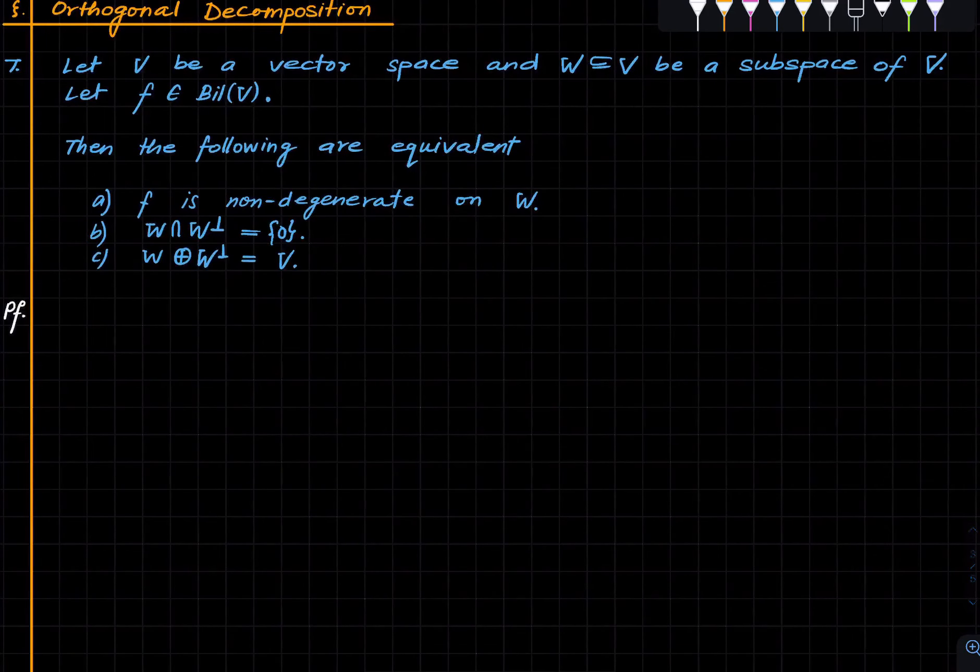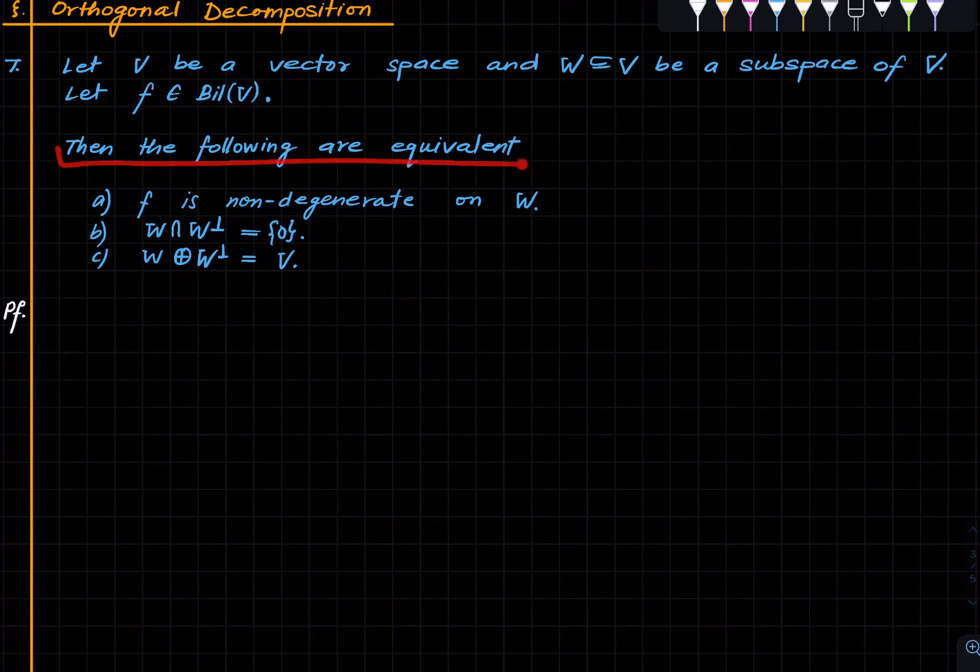Here is the theorem that we want to do. Let V be a vector space, W be a subspace of V, and F be a bilinear form on V. Then the following are equivalent.